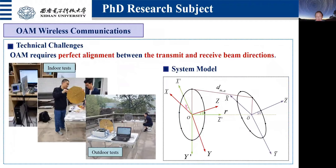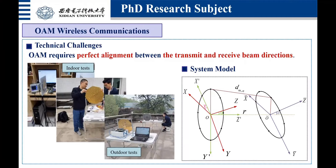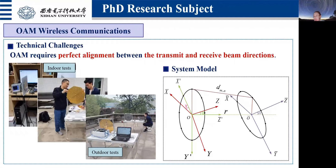However, there are still many technical challenges in OAM wireless communications. In our experiments, we found that when the transmitted and received OAM beams are misaligned even by a small tilt angle, the system will suffer a large performance loss. So OAM wireless communications require perfect alignment between the transmitted and received arrays, or at least perfect alignment between the OAM beams. We also found that the OAM channel completely depends on the relative position between the transmitted and received arrays. Therefore, before OAM beam alignment, we first need to obtain that relative position.